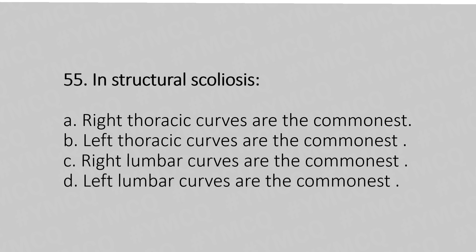Now let's move to question number 55. In structural scoliosis: option A, right thoracic curvature is the commonest; option B, left thoracic curvature is the commonest; option C, right lumbar curvature is the commonest; option D, left lumbar curvature is the commonest.